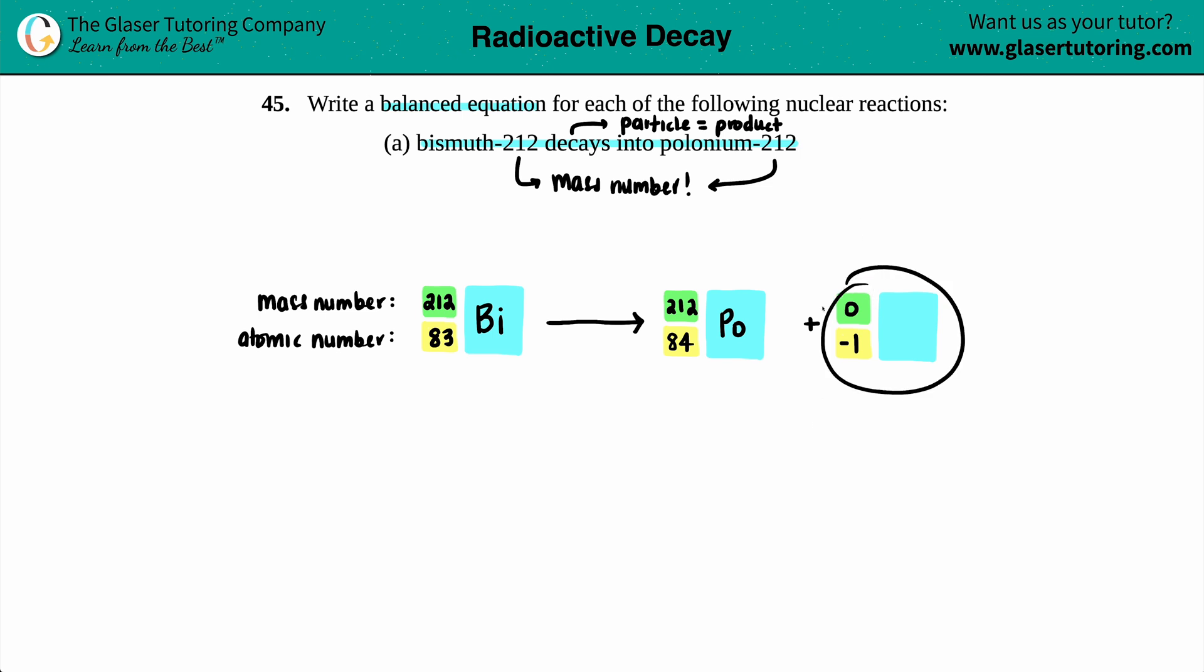But now the question is, who is this? Well, a zero and a negative one, the only particle that is a negative one charge, a negative charge, has to be an electron. Now electron is one way of saying it, you could also call it a beta particle. They are identical to each other.